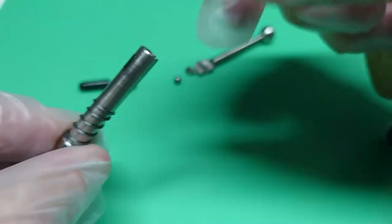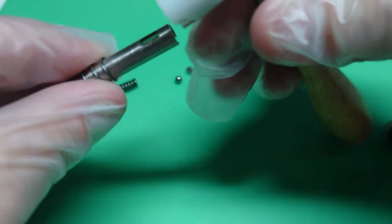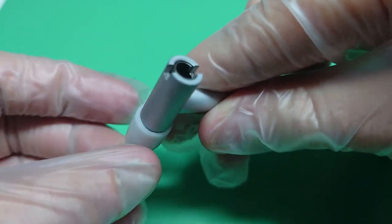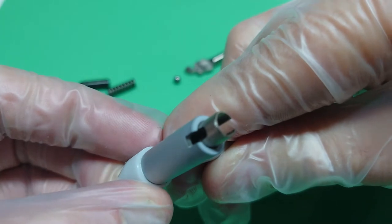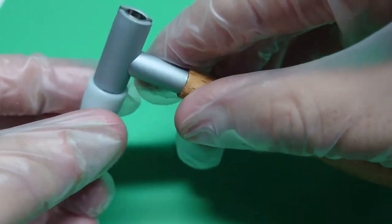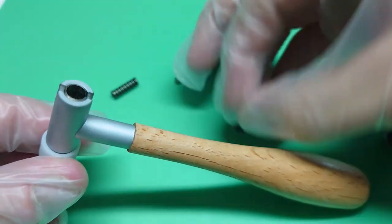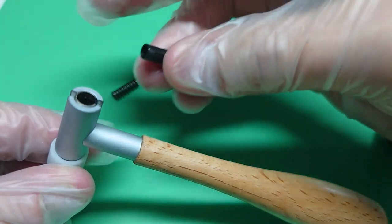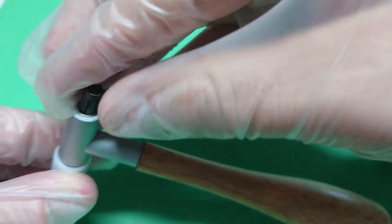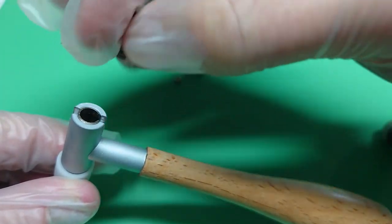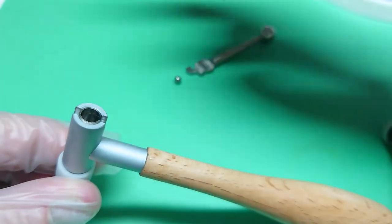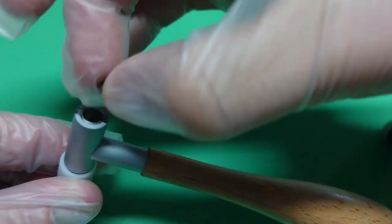Look at the hole there, this has to be up. You can see the hole there, and then you have to take this one, place it there, and then this one, and then this little ball there.